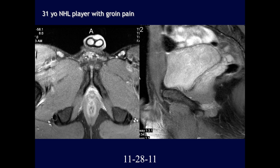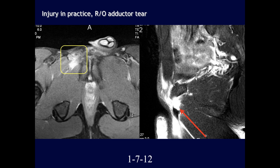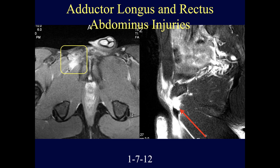Initial imaging on November 28, 2011 showed subtle findings. Two months later on January 7, 2012 with increasing pain, there is now disruption of the right adductor longus with fluid signal and probable hemorrhage compatible with complete tear at the insertion. When these injuries are played through, they can become considerably worse.